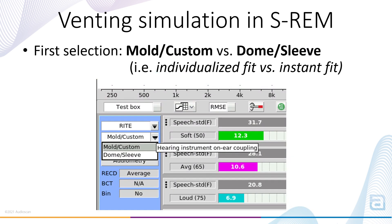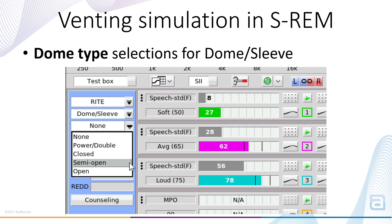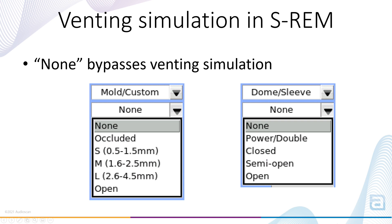In the first menu, the clinician chooses between mold/custom and dome/sleeve. If mold/custom is selected, the second menu provides a selection of vent sizes for custom products or those which use a custom ear mold, such as a standard BTE. If dome/sleeve is selected, the second menu provides categories of instant ear tips. In each case, the appropriate predicted venting effect is applied during the subsequent measurements. In both venting corrections menus, the none selection is provided to allow the bypassing of the corrections entirely and ensure measurements equivalent to those from previous software.